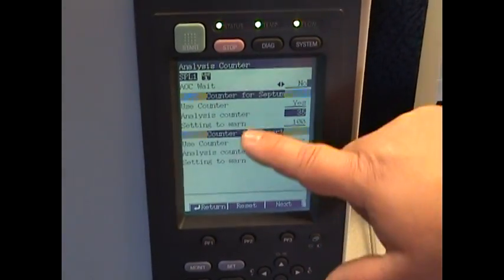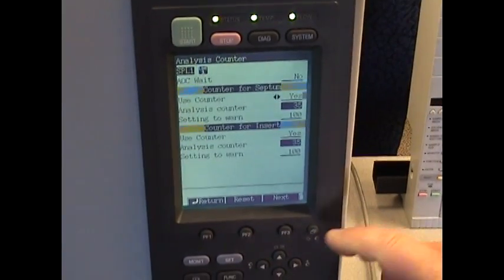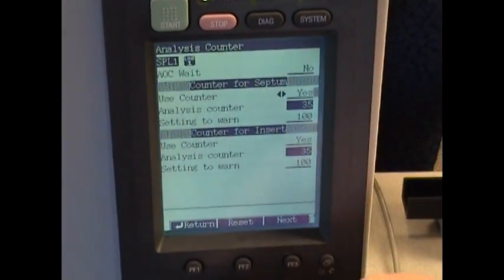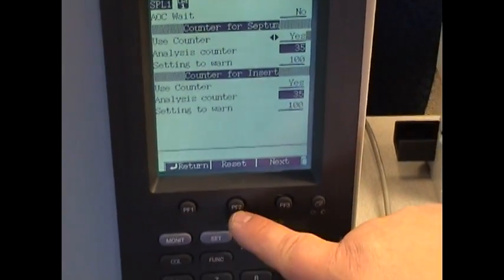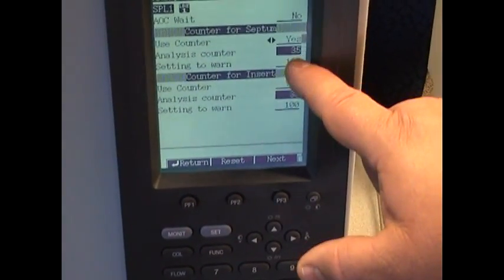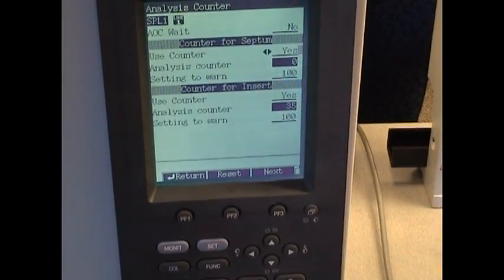But right here you see counter for septa. I'm going to toggle down. And down here in the options, PF1, PF2, or PF3, PF2 says reset. Now watch the number here. Currently I have 35. If I push that, it goes to zero.